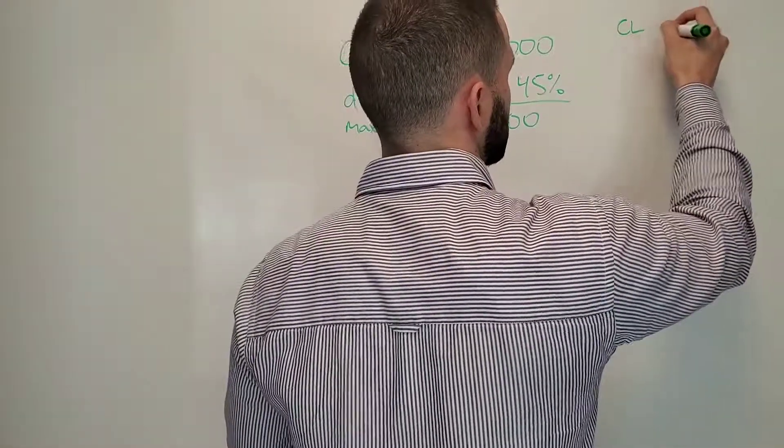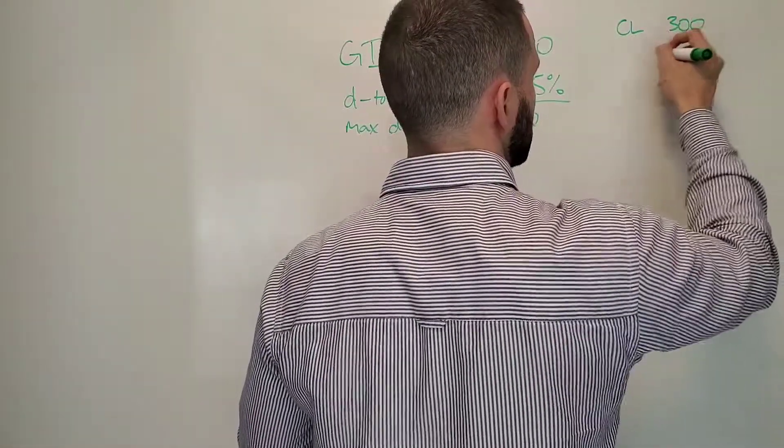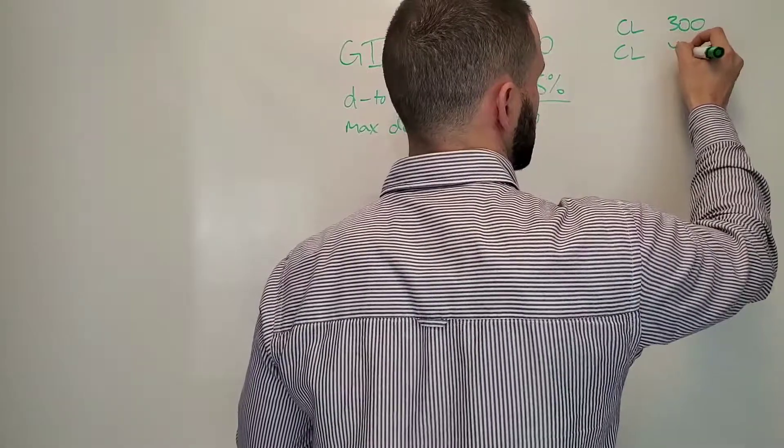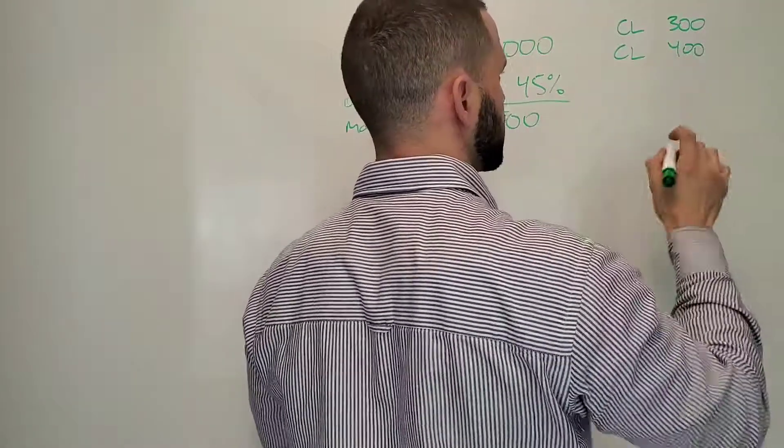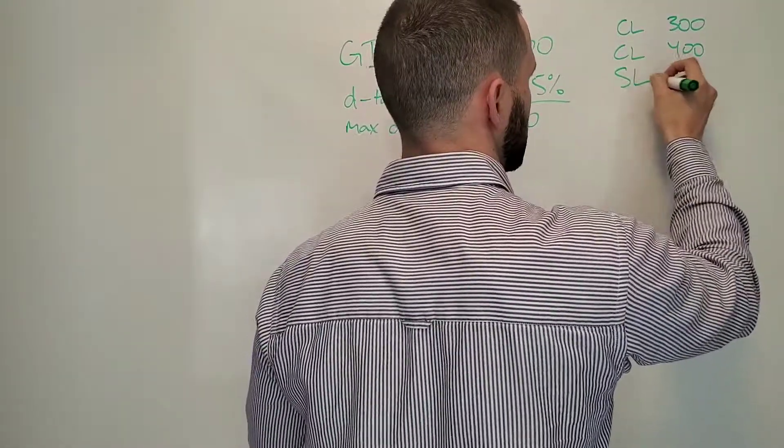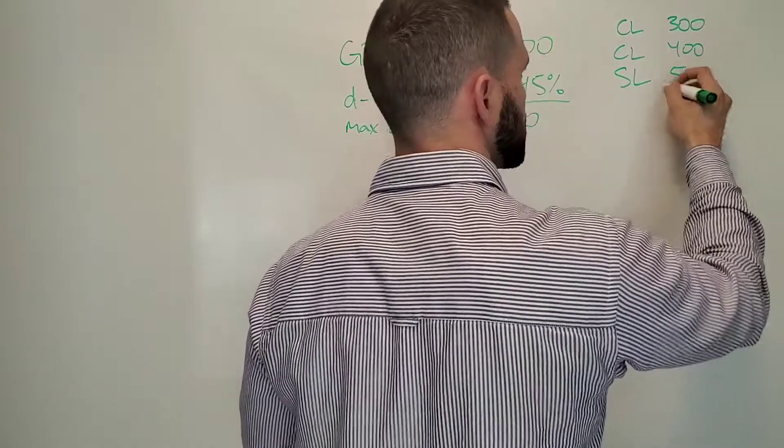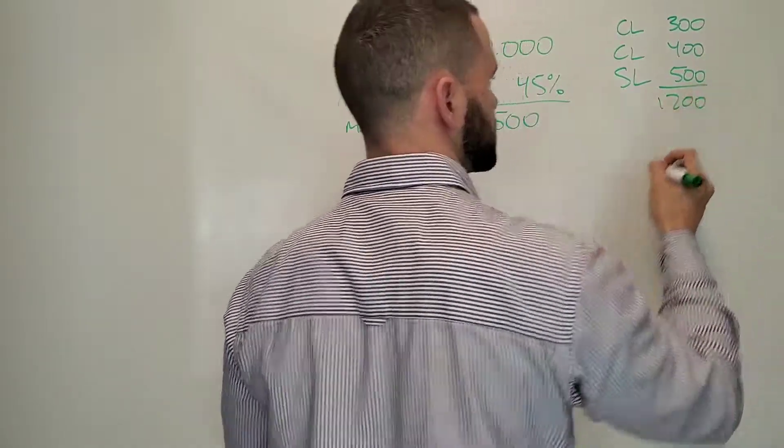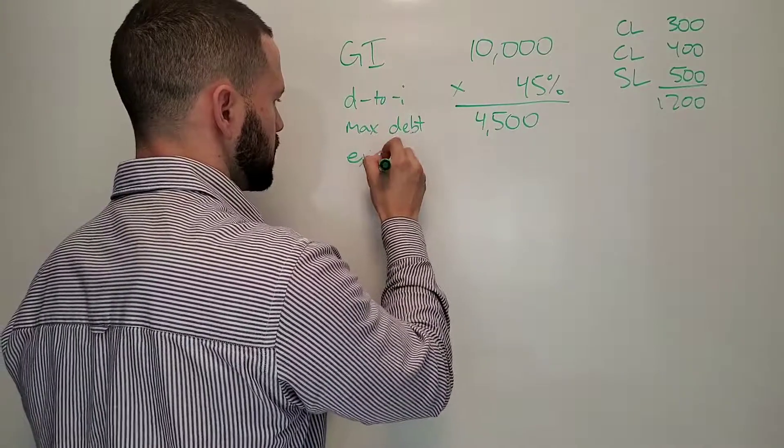Let's say you got a car loan that's $300, another car that's $400. You don't have any credit card debt, but then you do have a student loan that's $500 per month. So total, you're at $1,200 of existing debt.